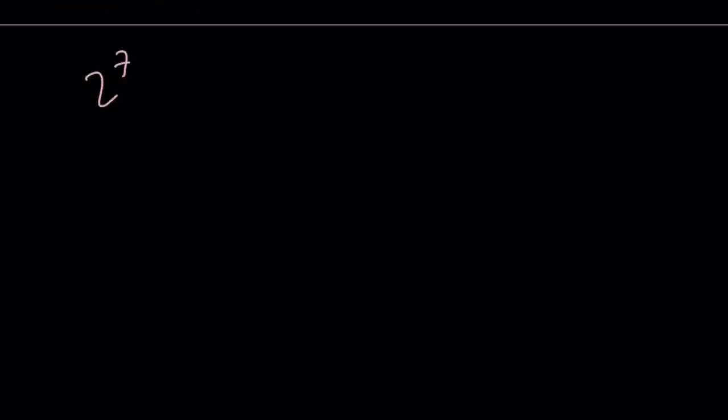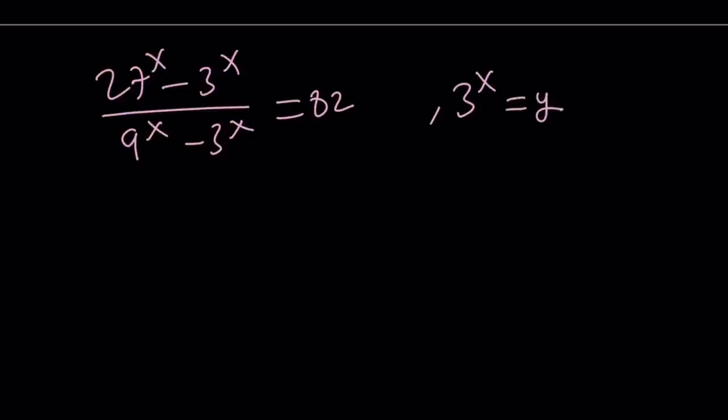Let me rewrite the original problem. This is equal to 82 and we called 3 to the power x, y. Now 27 to the power x, remember that was y cubed, 3 to the power x is y, 9 to the power x is y squared, and 3 to the power x is y again, and this is equal to 82.